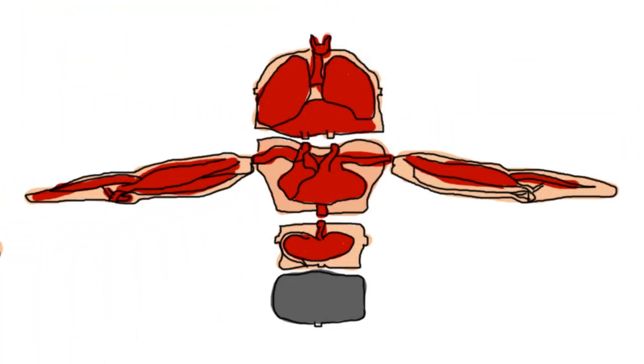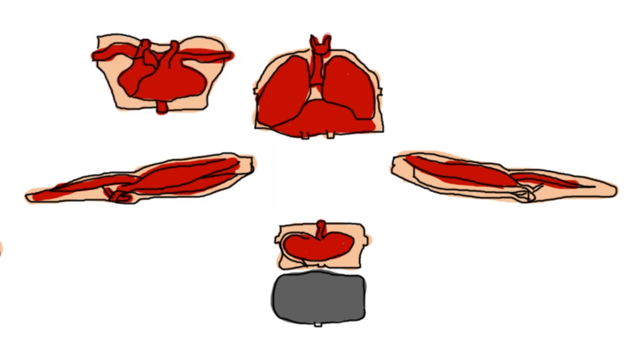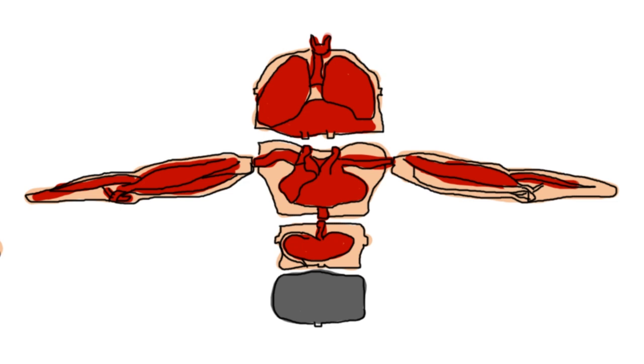If an organ gets ill, you can easily replace it with a new one. Or, for example, if your body needs an extra arm, you can just upgrade the body with an extra limb module.